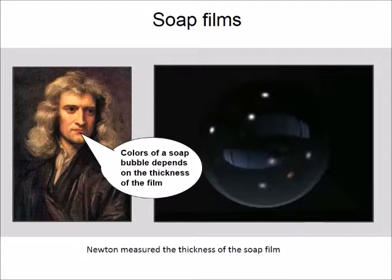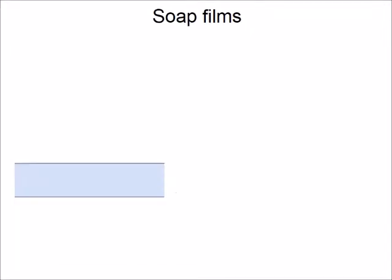What is the origin of these beautiful soap film colors? To understand this, let's consider a section of a thin film of water as shown here. The film has two surfaces, A and B, which are separated by the film thickness D.